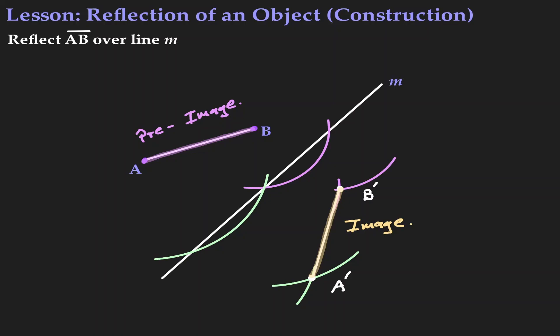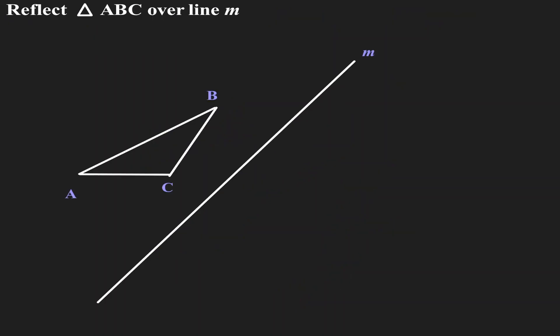Now let's look at another example. Here we want to take triangle ABC and reflect it over line M. Let's get our compass and repeat the previous steps three times — one for each vertex. Let's start with point B.